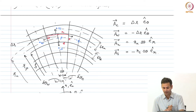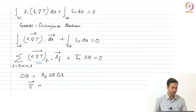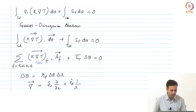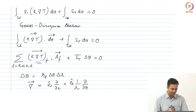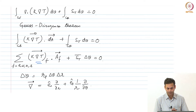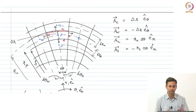We need the del operator to evaluate the gradients. In cylindrical or polar coordinates, del-bar equals ê_r times partial/partial_r plus ê_theta times (1/r) times partial/partial_theta. If you have a 3D volume like a cylinder, you add ê_z times partial/partial_z. This is the definition of nabla in cylindrical coordinates.